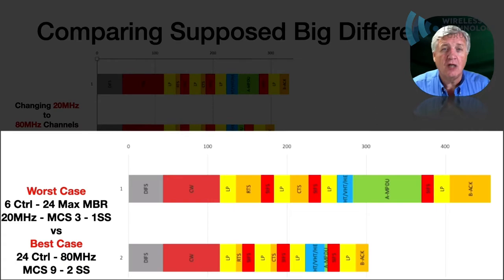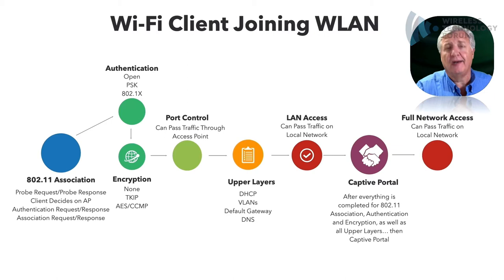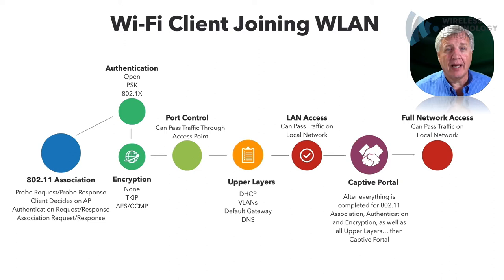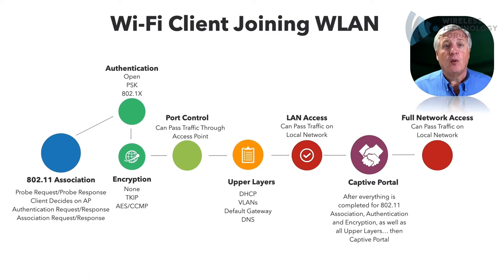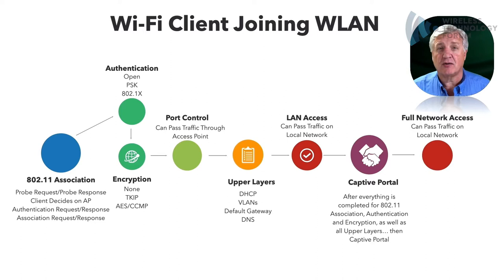Another thing that happens at the PHY layer is how a client joins. There's a whole process: probe request, probe response, authentication request, authentication response, association request, association response — then the client can get on the network. At that point there's either open, PSK, or 802.1X authentication, then an encryption portion, then port control, then upper layers for DHCP, DNS, VLANs, etc. Once all of that is open, you hit the captive portal. A lot of end users think the captive portal is the beginning — it's actually the end.